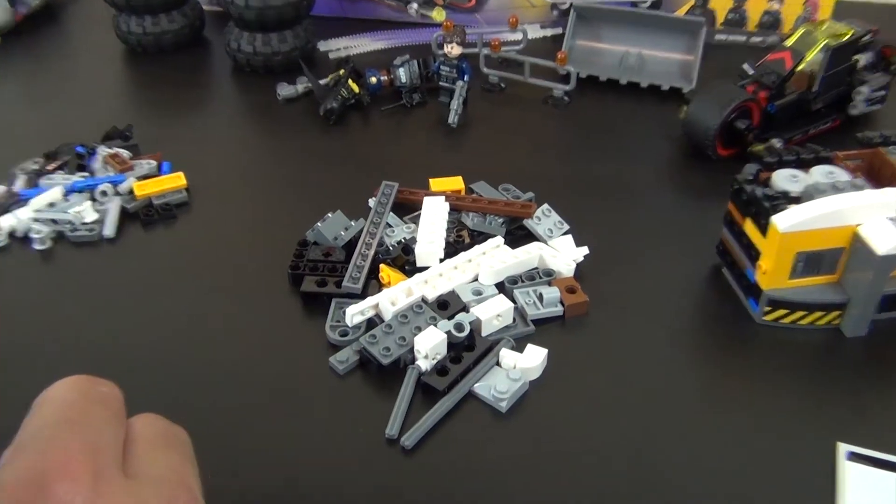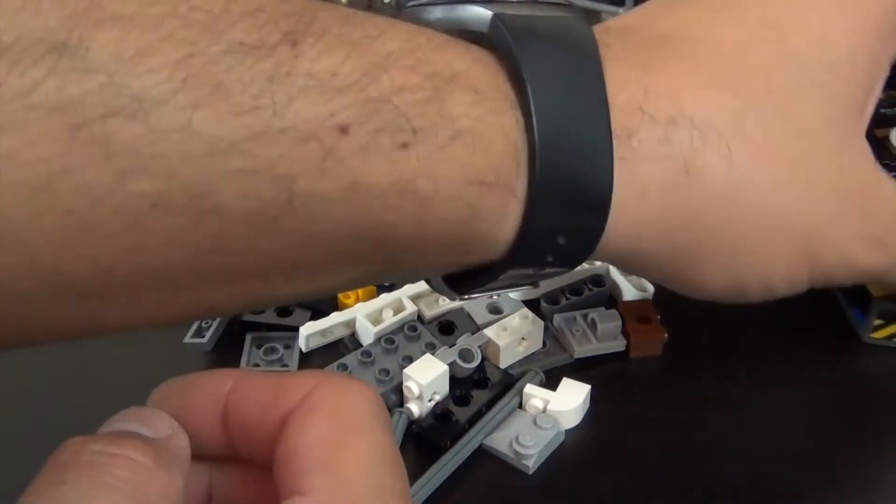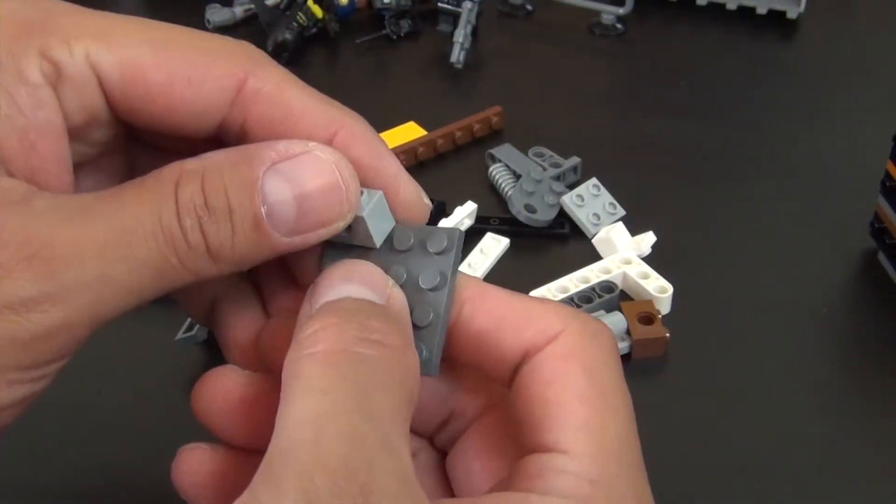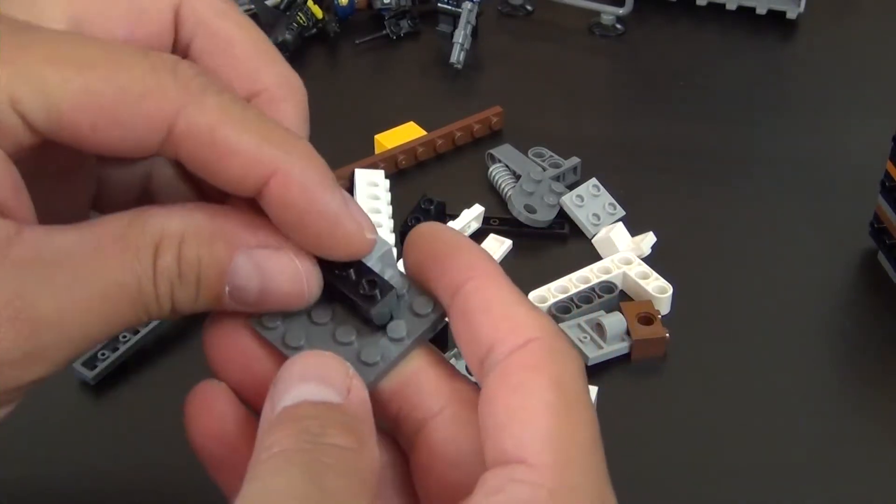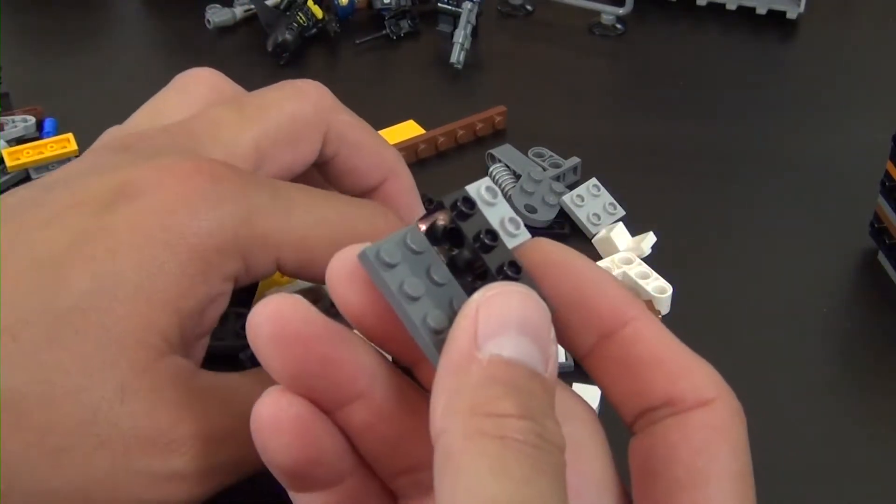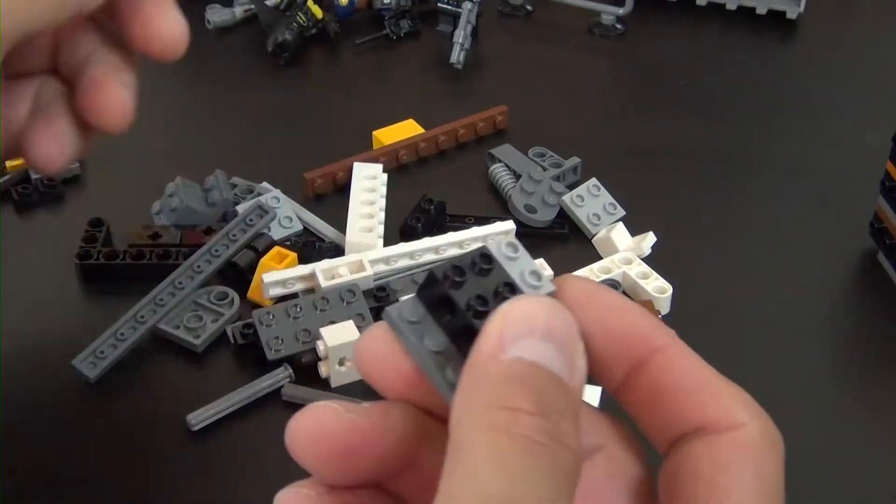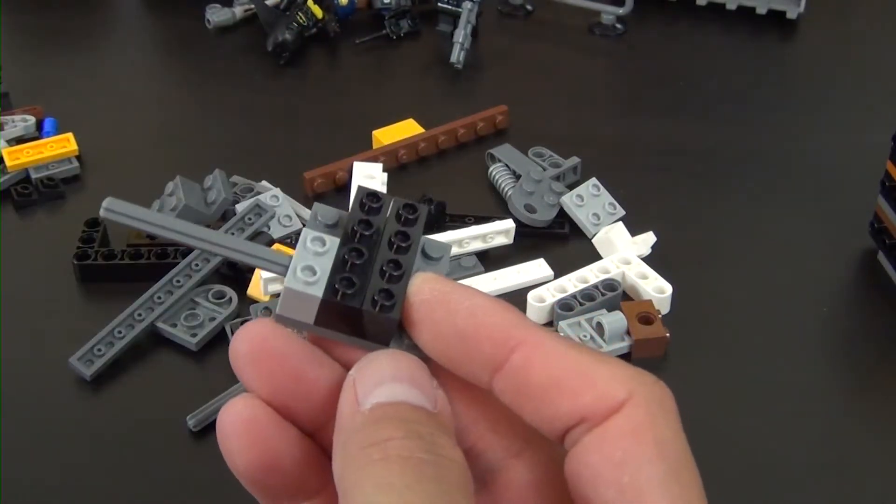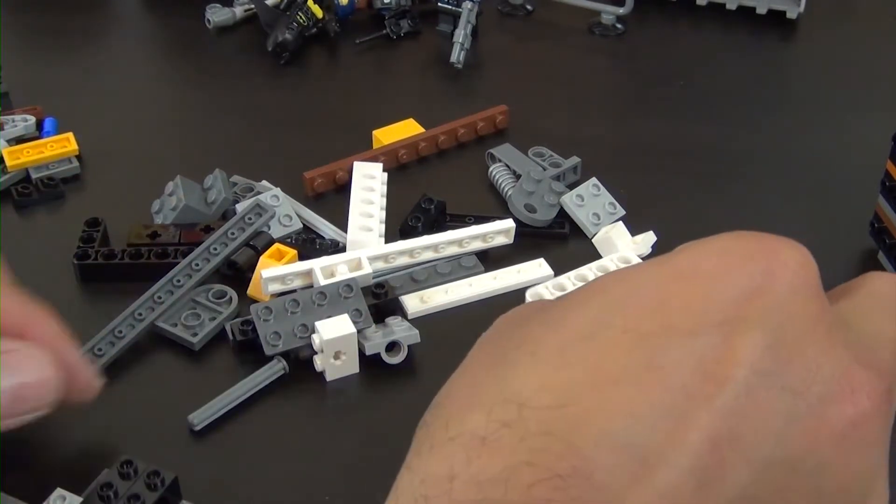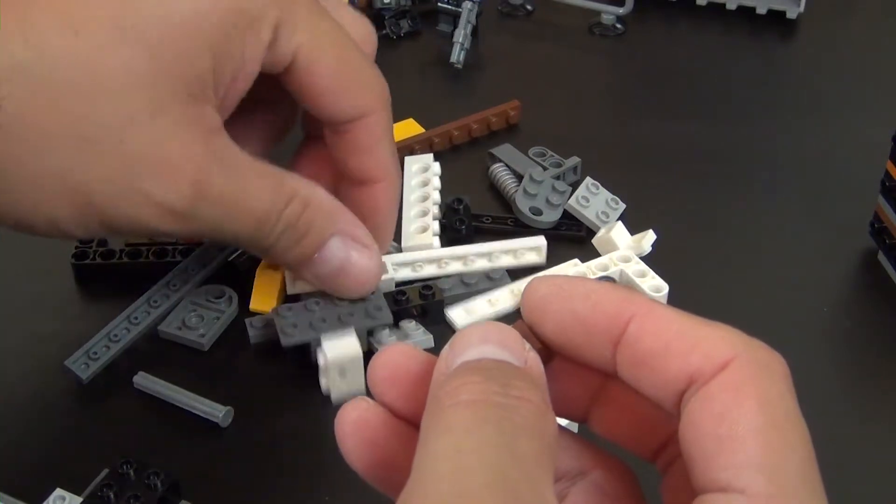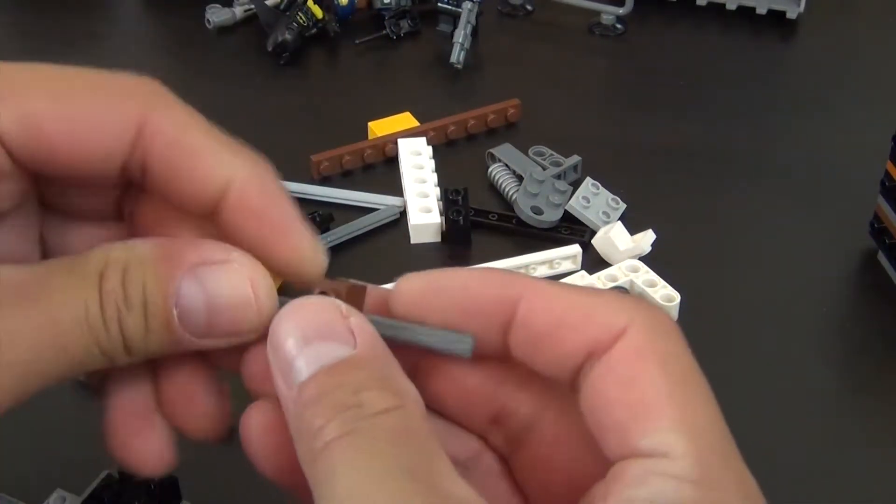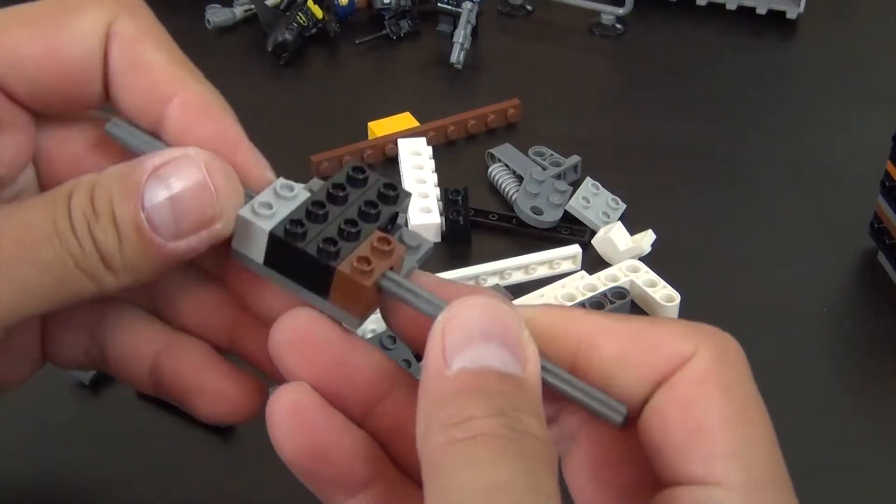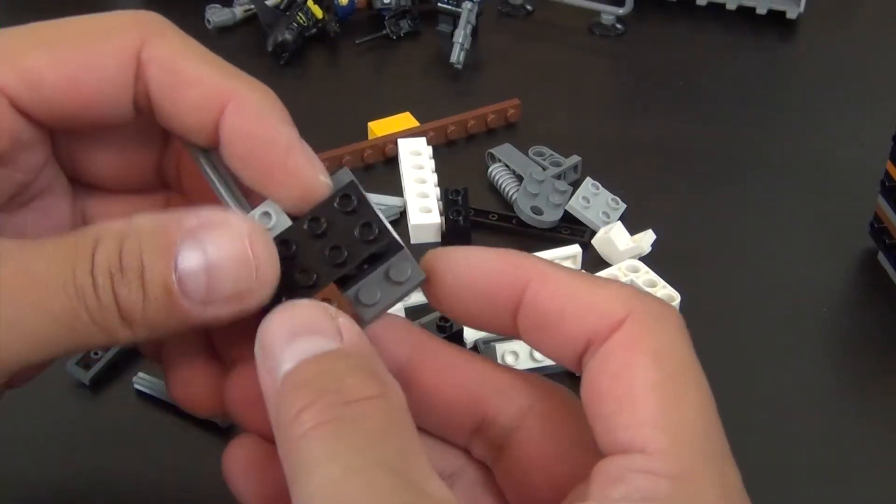All right, so let's zoom in a bit. We're not putting anything on this part just yet. Looks like we're going to build a little sub-assembly and then attach it. Start with these technic bricks, slide a long axle with a stop all the way through there. And then we have another long axle with a stop that's just slid on this one brick, and then we'll put them back to back.